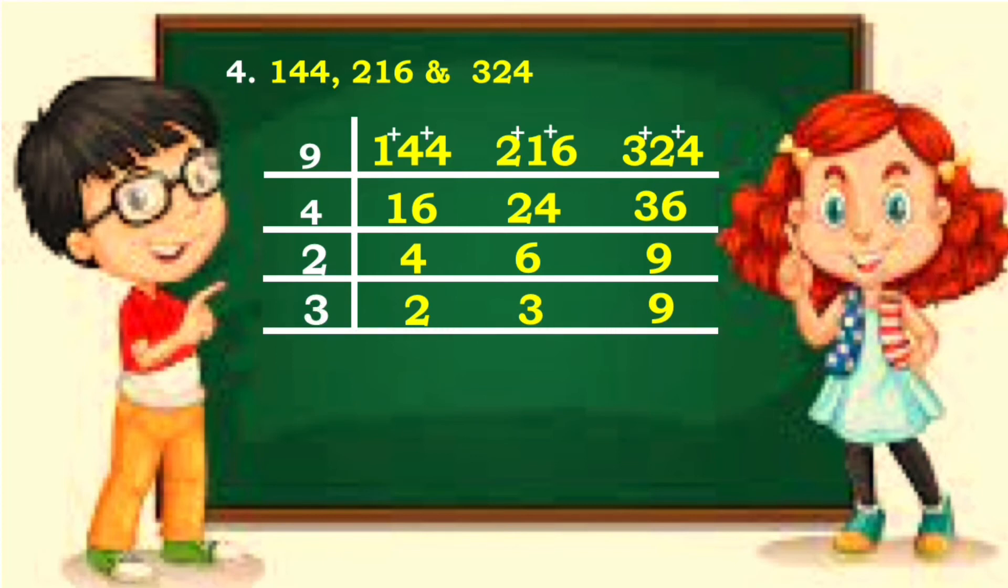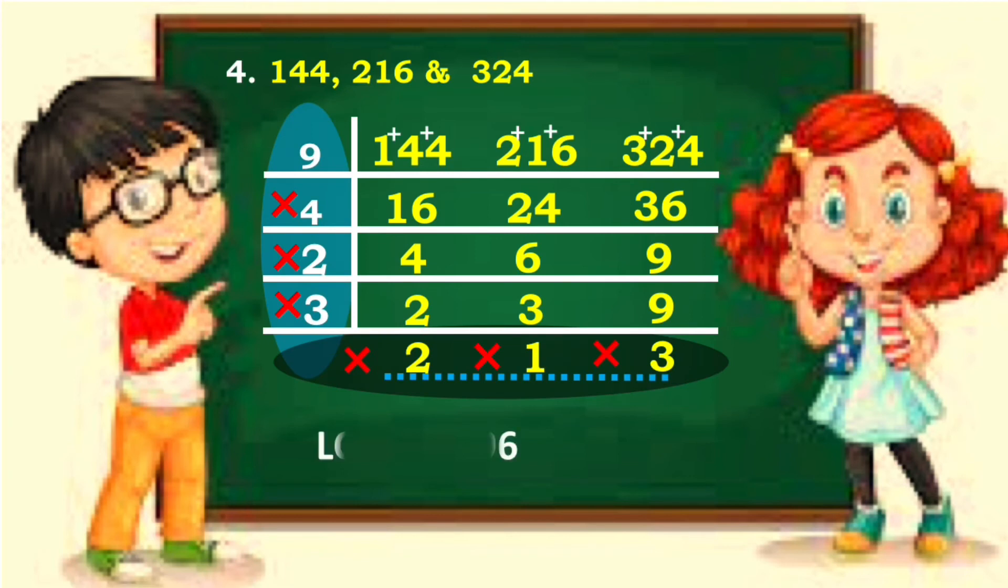3 and 9 are divisible by 3. Rewrite 2. Then 3 divided by 3 is 1. 9 divided by 3 is 3. The last quotients have no common factor already. Multiply all the divisors and the last quotients. Therefore, the LCM is 1296.